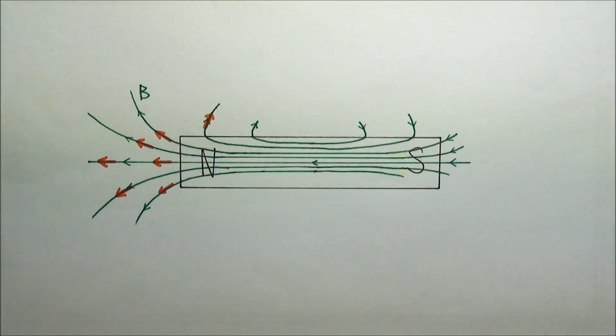We can represent the compass dipole or the iron filing dipoles with these red vectors to show how they align with the bar magnet's magnetic field.